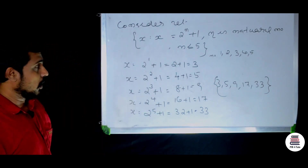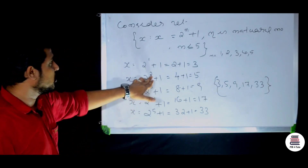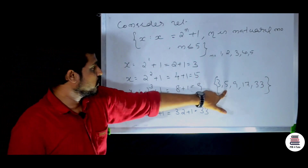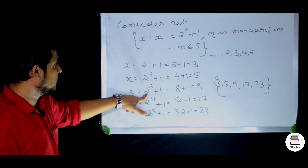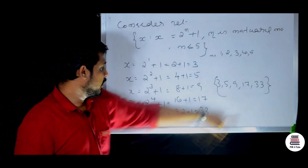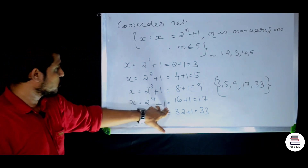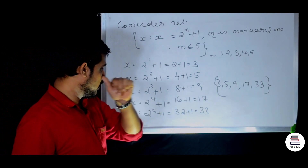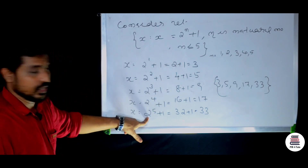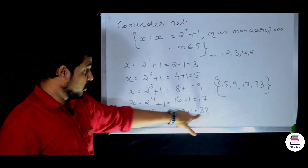When n equals 3: x = 2 raised to 3 plus 1 = 9. When n equals 5: x = 2 raised to 5 plus 1 = 32 plus 1 = 33. So the set in tabular form would be {3, 5, 9, ...33}.